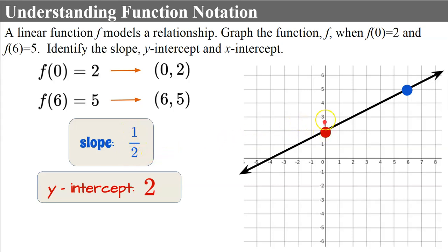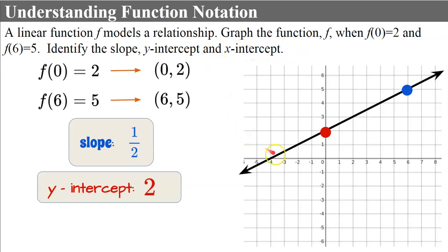With slope one-half, we rise 1 and run 2 repeatedly to confirm our line. Remember, the ratio should always be in simplest form. To identify the x-intercept, we look at where the line crosses the x-axis, and that is negative 4.